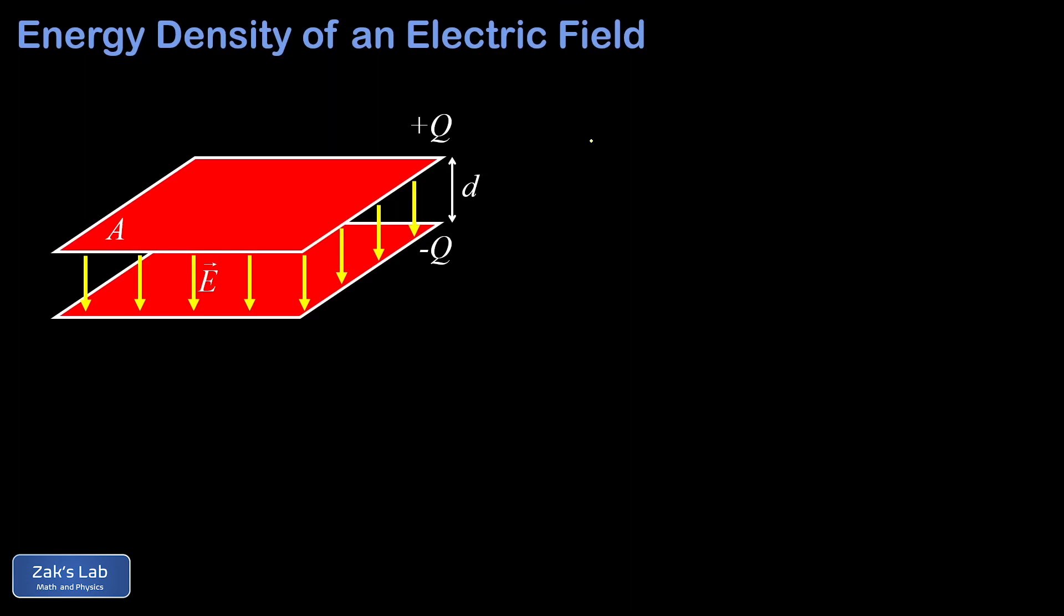In that formula, C is the capacitance and V is the potential difference across the plates. We found this energy by calculating the work required to move charge from one plate to the other.